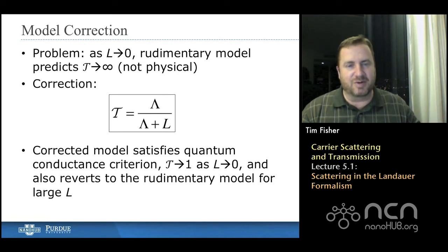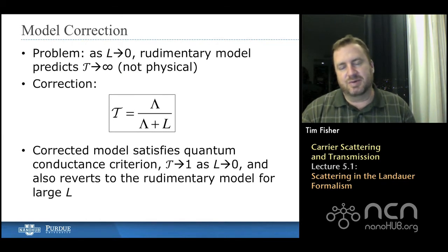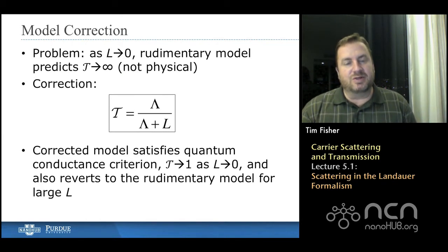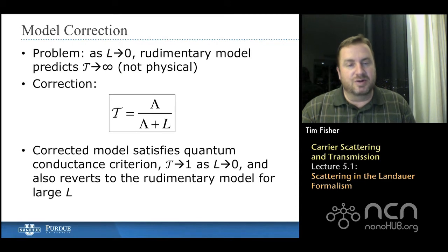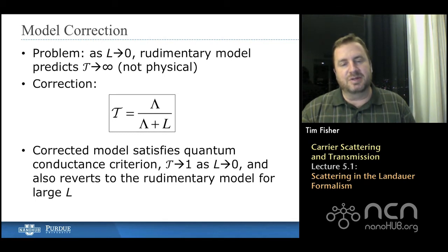Its maximum should be one in general. There are some other cases where it can be greater than one if we're lumping together different branches of phonons, for example. But for now, we'll think of this transmission function as a simple probability. And so we'll make a correction to our intuition.